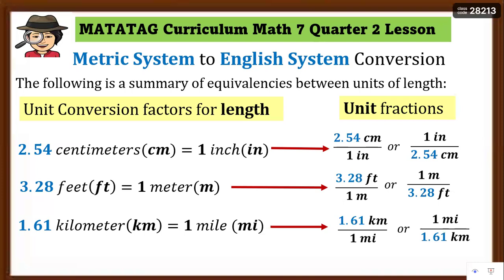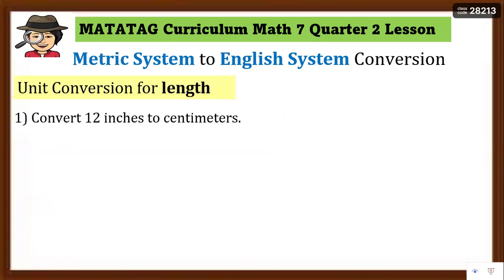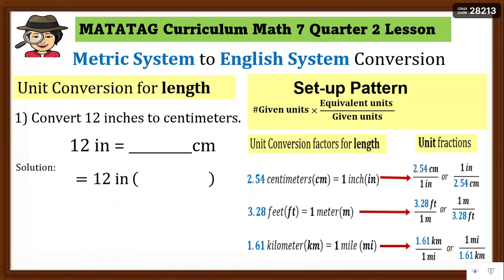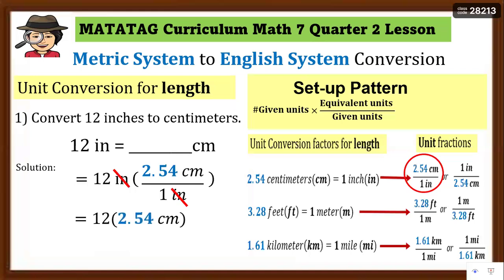Ito po ang kailangan natin tandaan para makapag-convert tayo ng unit to another unit ng length. Let's convert number one: convert 12 inches to centimeters. Write the equation and then set up a pattern — since the given unit is inches going to centimeters, we have to use the unit fraction 2.54 centimeter over one inch. Cancel the same unit 'inch,' then multiply: 2.54 centimeter times 12 equals 30.48 centimeters.